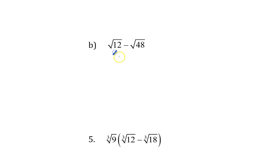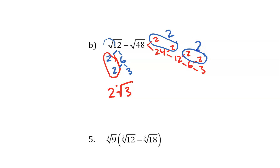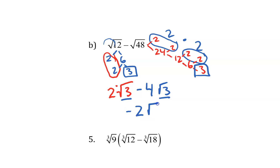B: first we need to simplify. 12 is 2 times 6, and 6 is 2 times 3. This is a square root, so I need a pair. I have a pair of 2's — that becomes 2 times the square root of 3. For 48: 2 times 24, 24 is 2 times 12, 12 is 2 times 6, and 6 is 2 times 3. I have a pair of 2's so a 2 comes out, and another pair of 2's so another 2 comes out — so I have 4 out in front. This is minus 4 radical 3. They are like terms — 2 of them minus 4 of them is negative 2 radical 3.